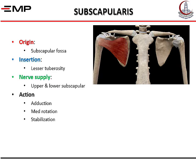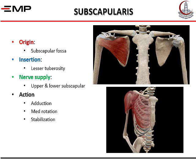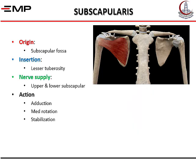The subscapularis arises from the subscapular fossa and inserts into the lesser tuberosity of the humerus. It passes in front of the shoulder joint, where it has a subscapular bursa that typically communicates with the shoulder joint. It is supplied by both the upper and lower subscapular nerves from the posterior cord of the brachial plexus. Its actions are adduction, medial rotation, and stabilization of the shoulder.